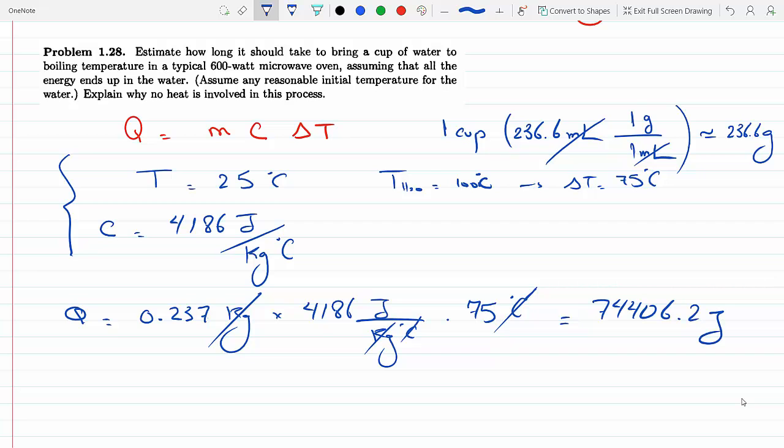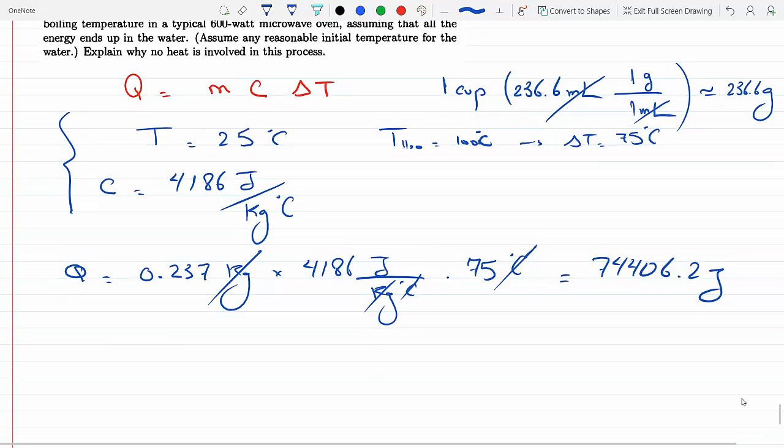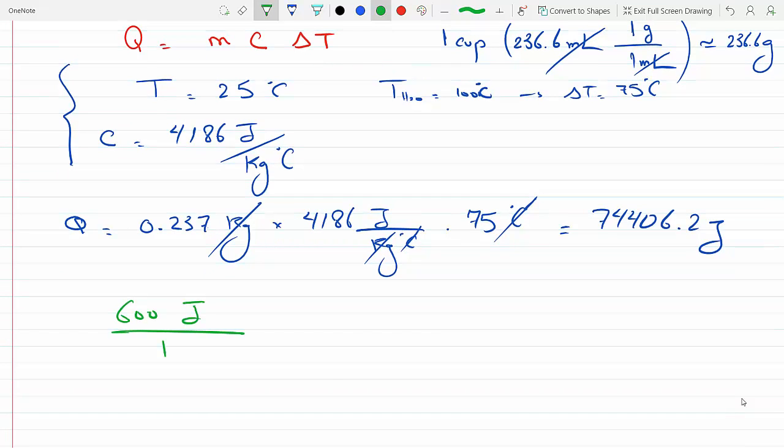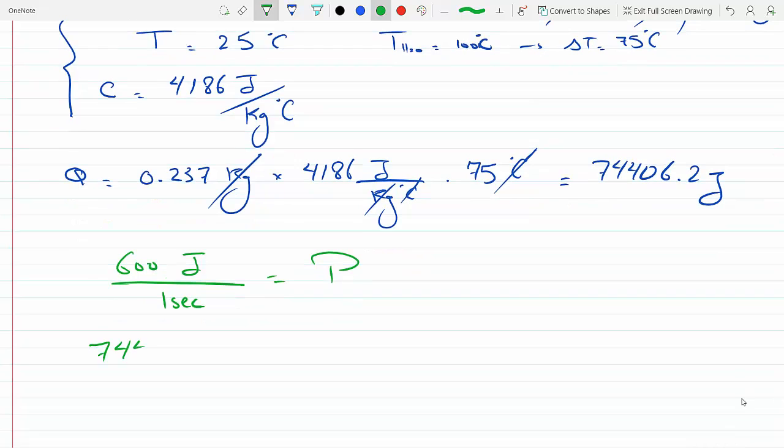I know that the power of the microwave is 600 watts, so that is 600 joules per one second. And if I need to supply 74,406.2 joules—so this is the power of the microwave—I need to supply 74,406.2 joules. How much time would it take if I'm supplying 600 joules every one second? And you can see here dimensional analysis: without really memorizing any formulas, you just have to look at the units. I need to make the joules cancel, so I need to flip the ratio of the power so that I can have the joules in the denominator, and I would get my answer in seconds.